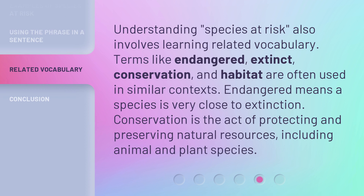Understanding species at risk also involves learning related vocabulary. Terms like endangered, extinct, conservation, and habitat are often used in similar contexts. Endangered means a species is very close to extinction. Conservation is the act of protecting and preserving natural resources, including animal and plant species.